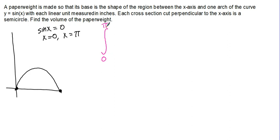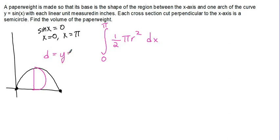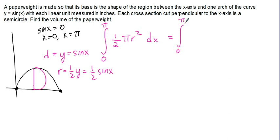This time we're looking at semicircles, and the area of a semicircle is one half pi times the radius squared. We're doing these cross-sections perpendicular to the X-axis, so the thickness of each cross-section will be DX. We're going to integrate from 0 to pi, one half pi R squared DX. The problem is we have to figure out what R is. Our diameter of our semicircle should be equal to our Y value, which is sine X, which means our radius should be half of that — so our radius is one half sine X.